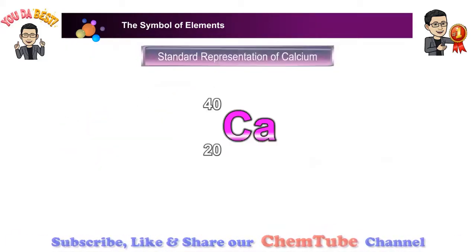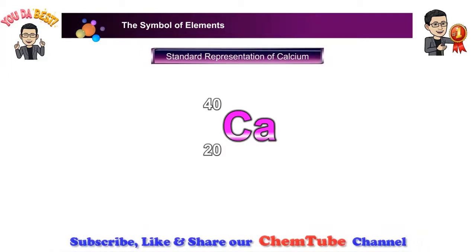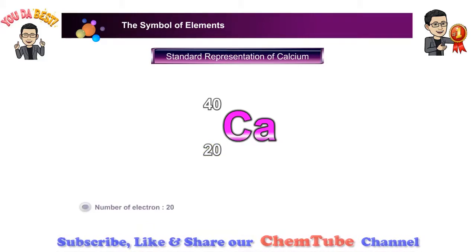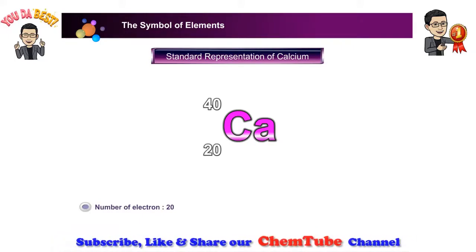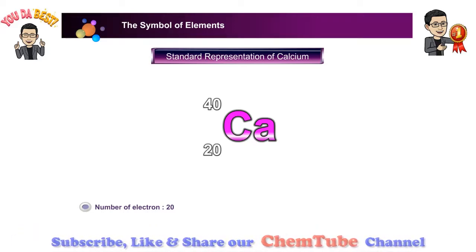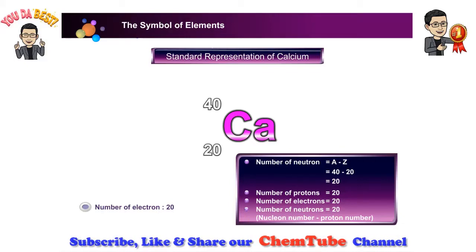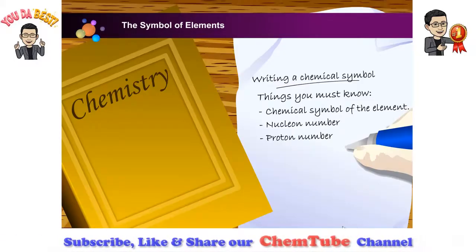Let us take a look at the standard representation of calcium. The number of protons is 20. The number of electrons is 20. The number of neutrons is equal to nucleon number minus proton number, which means 40 minus 20 equals 20. From the chemical symbol, it is known that calcium has 20 protons, 20 electrons, and 20 neutrons.